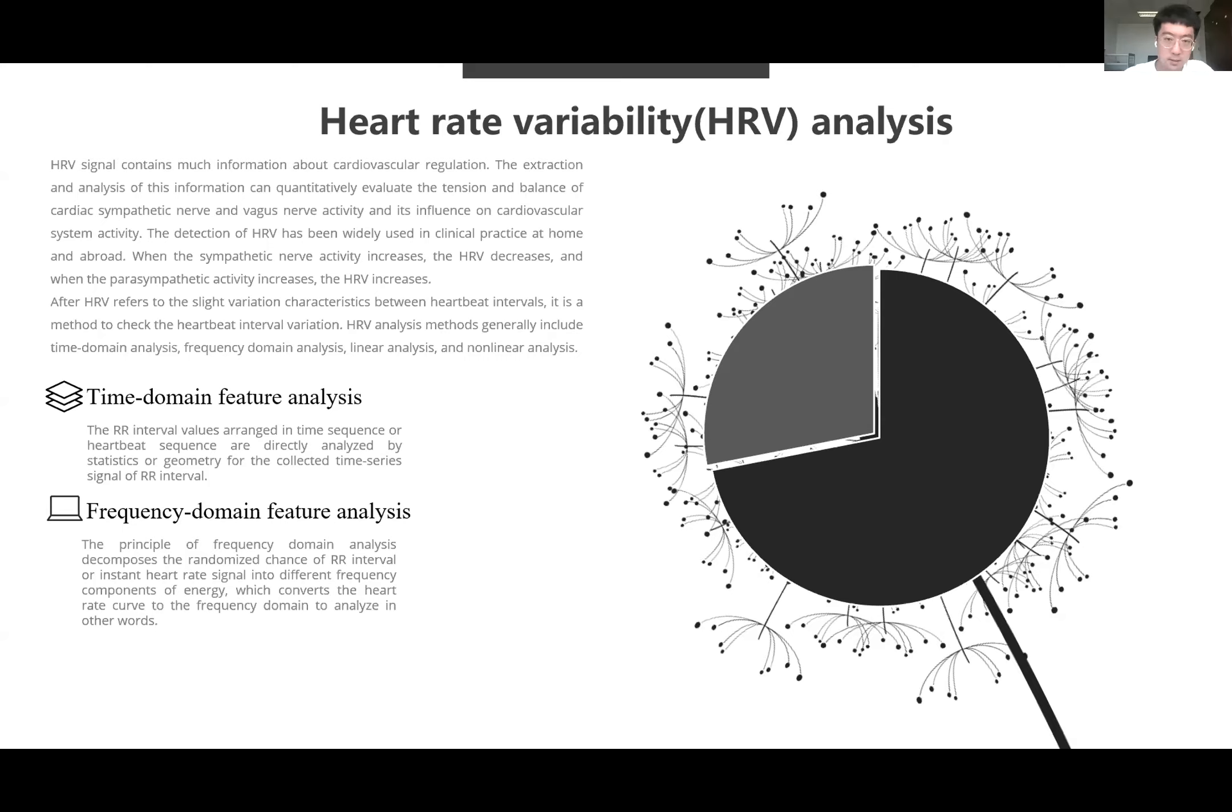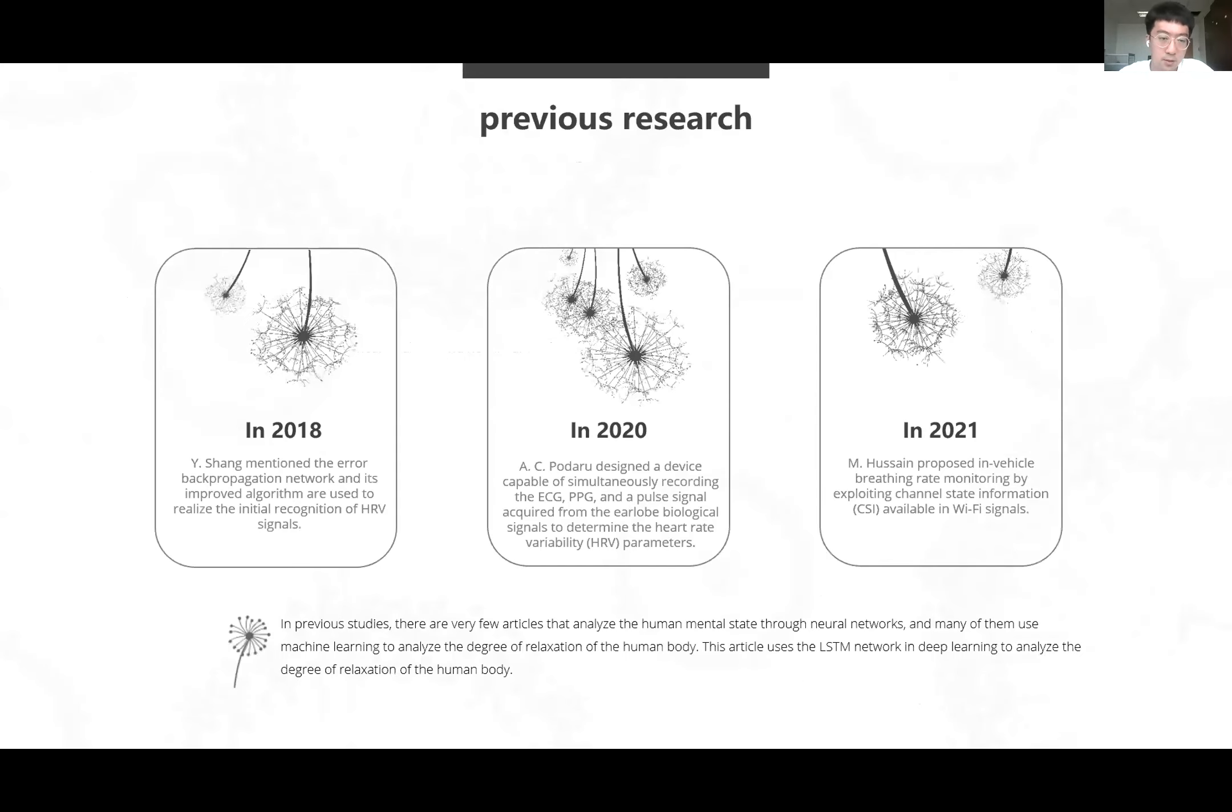Part two, the method. Now let's see the previous research. I showed three previous research, specifically in 2018, 2020, and 2021. In previous studies, there are very few articles that analyze the human mental state through neural networks, and many of them use machine learning to analyze the degree of relaxation of the human body. So this article used the LSTM network in deep learning to analyze the degree of relaxation of the human body.